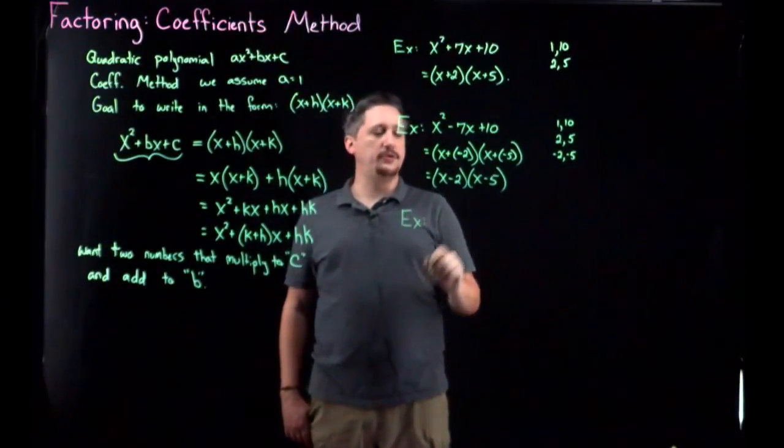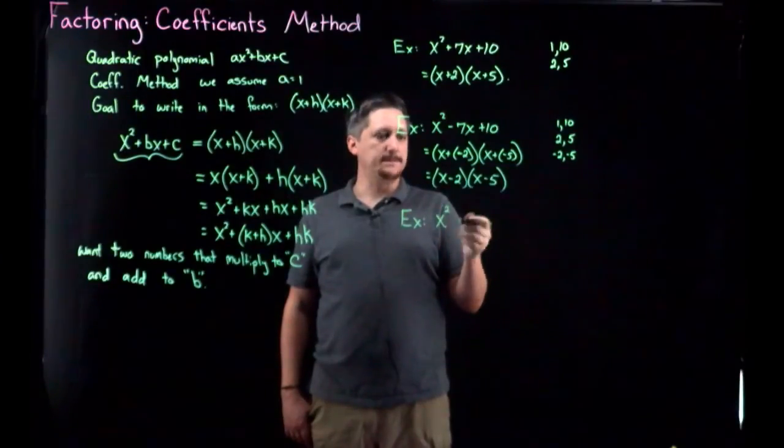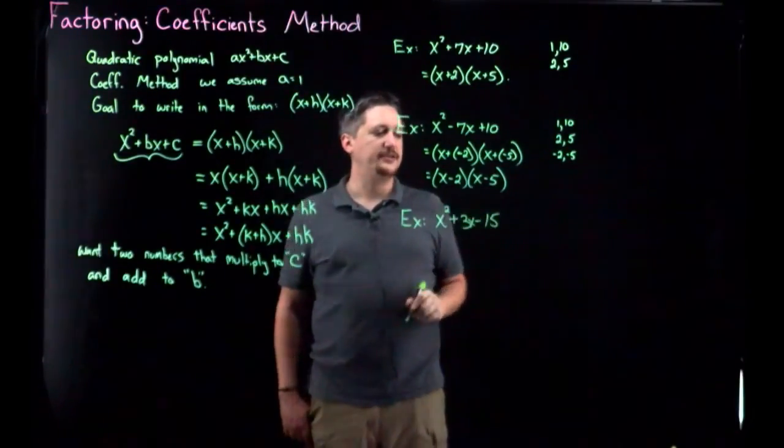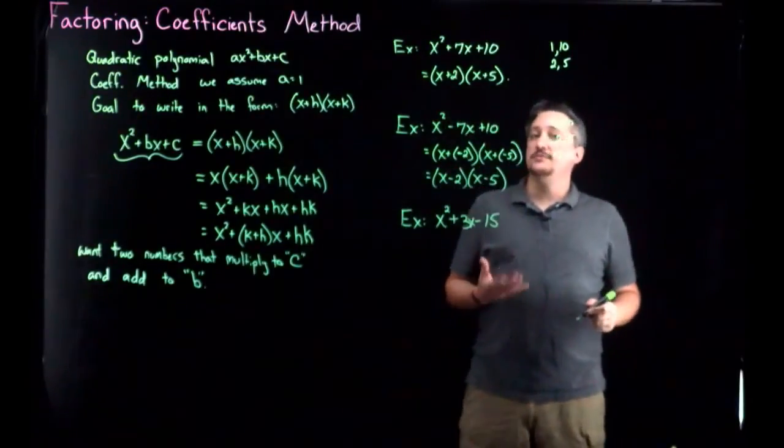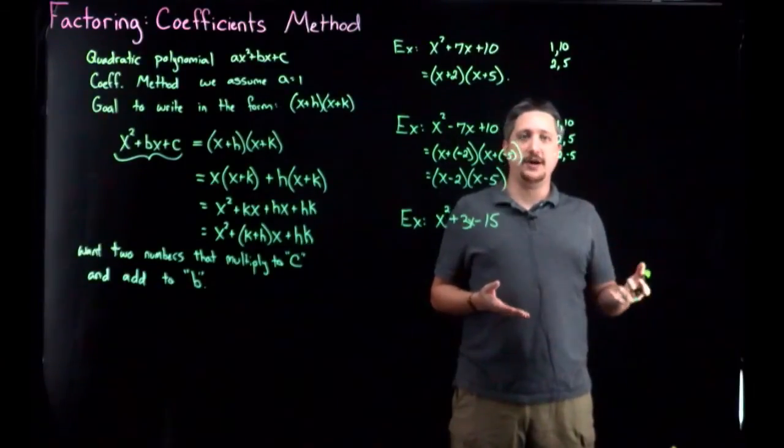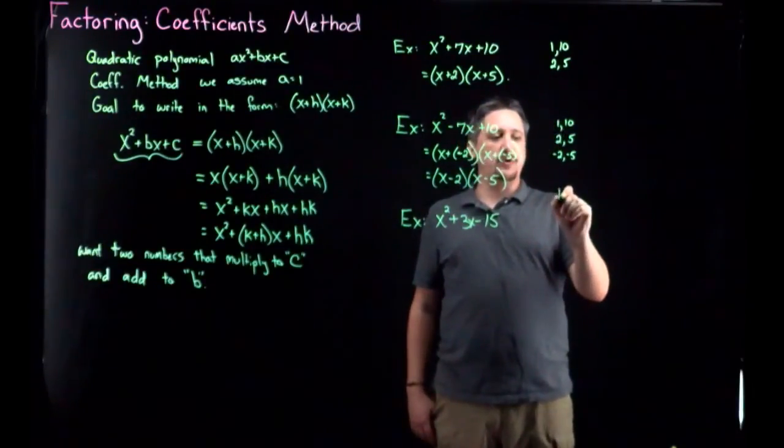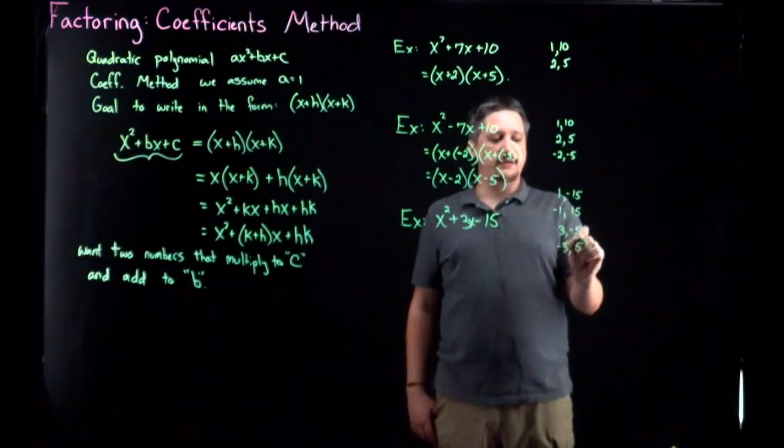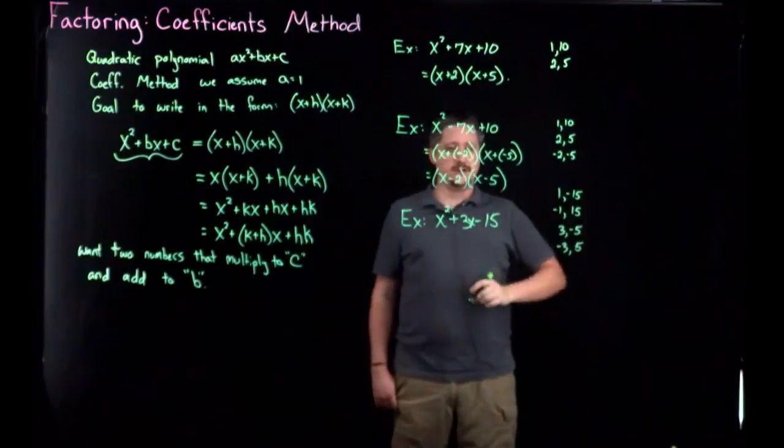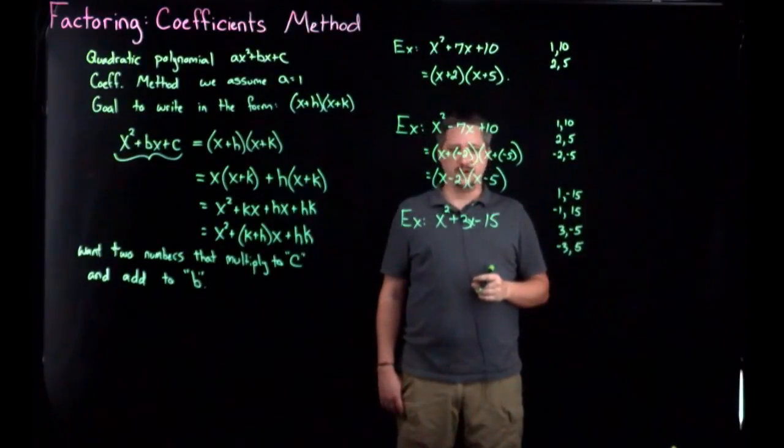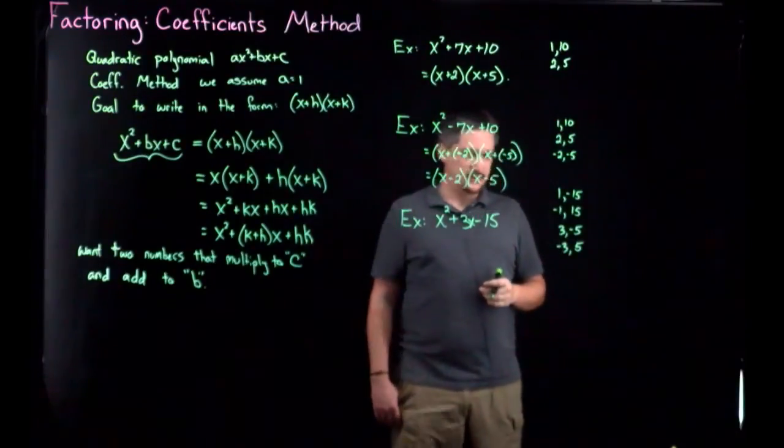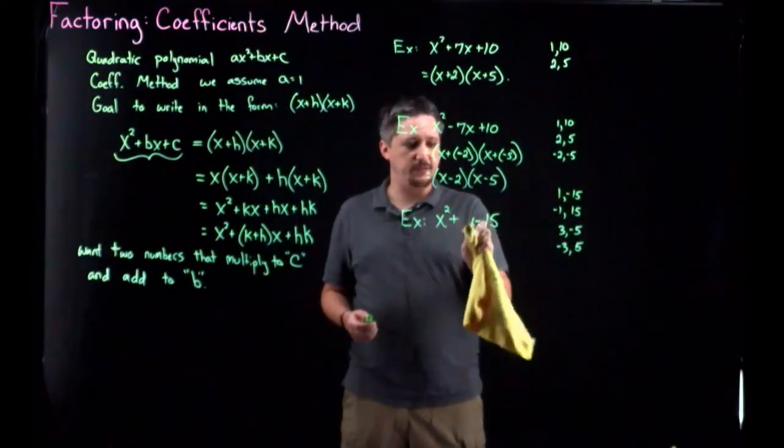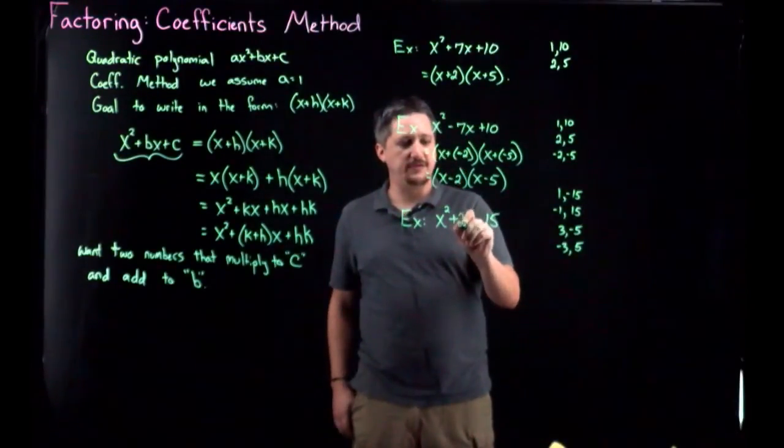And last but not least, another example. Let's look at x squared, let's look at plus 3x minus 15. Sorry, just so I don't have to rewrite it, I'm just going to rewrite this instead. This wasn't the example I was going to do, but that's okay. So let's make this 2x.